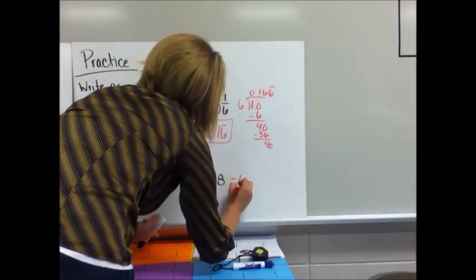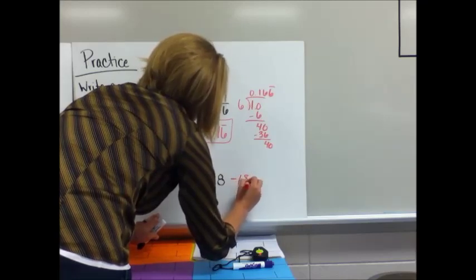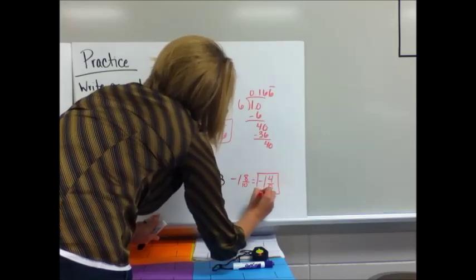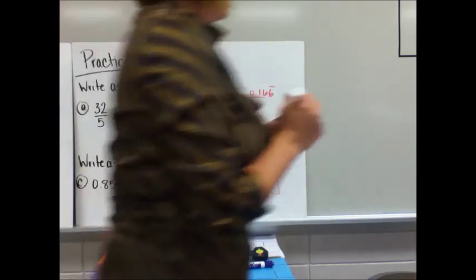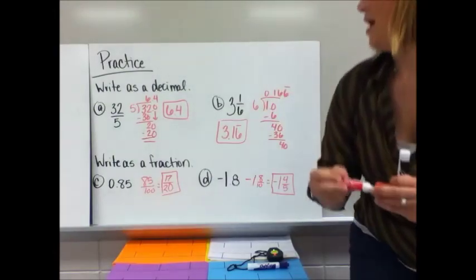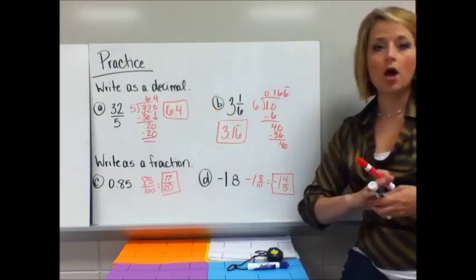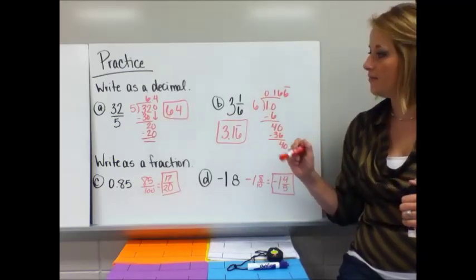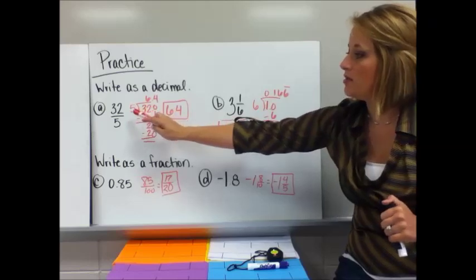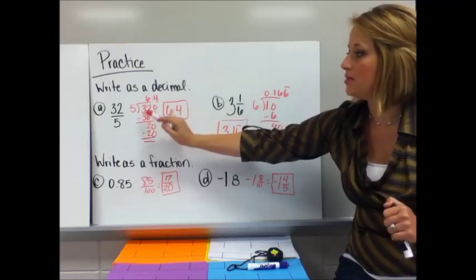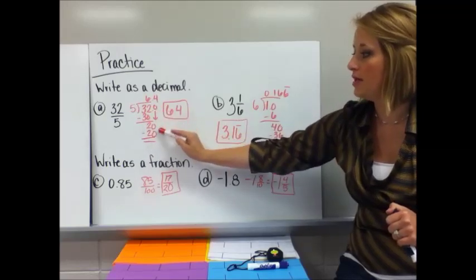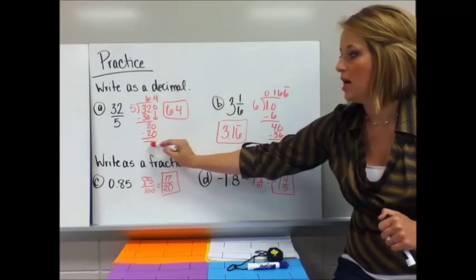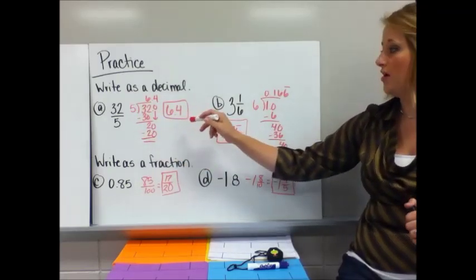Five goes into 2 four times. Multiply again: 4 times 5 is 20. It terminates. So my answer is 6.4.